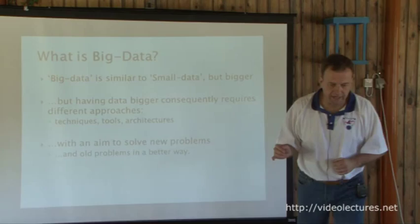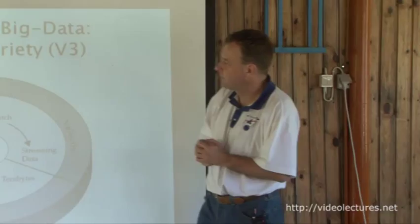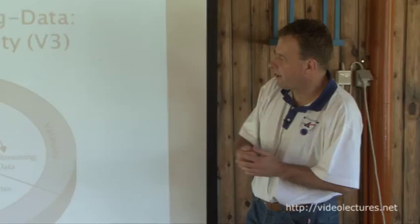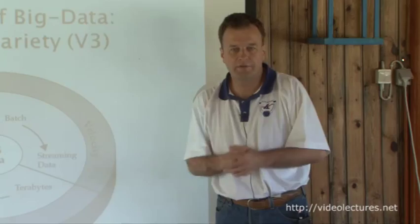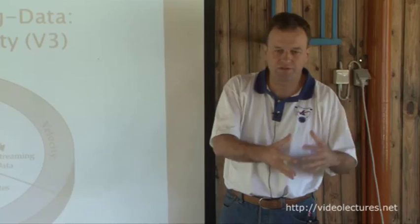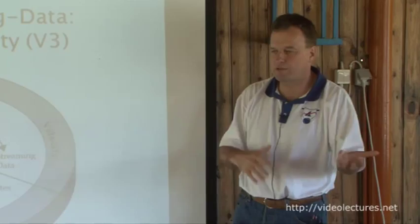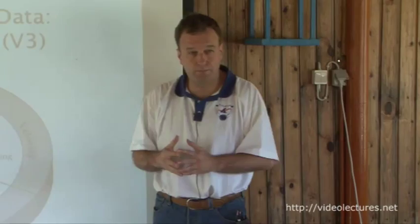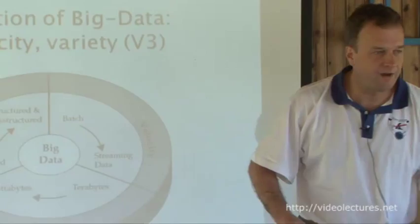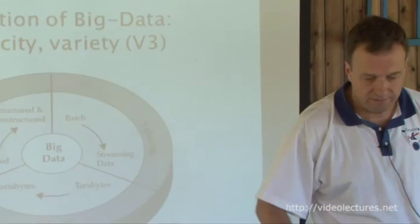IBM characterized big data using three V's: volume, velocity, and variety. Variety means multi-modality — from very structured data like ontologies, to unstructured data like sensor signals, text, and social networks. Velocity refers to the real-time aspect — data is moving and we need to be prepared for that. And volume is, of course, what big data ultimately means.